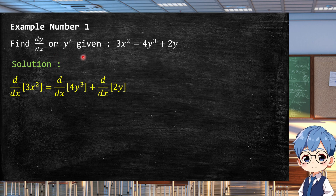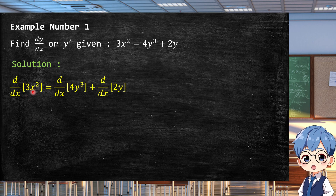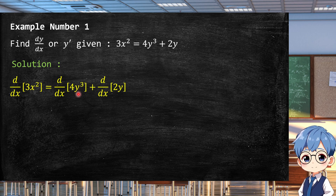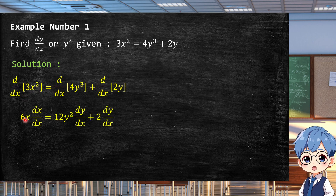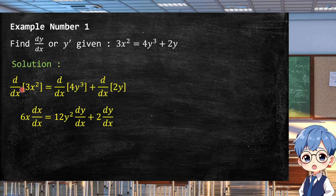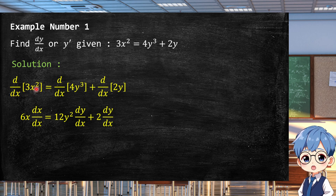We apply the differentiation rules per term. The derivative of 3x² with respect to x equals the derivative of 4y³ with respect to x, plus the derivative of 2y with respect to x. The derivative of 3x² is 6x — the change is with respect to x and the variable inside is x, so we have dx/dx.